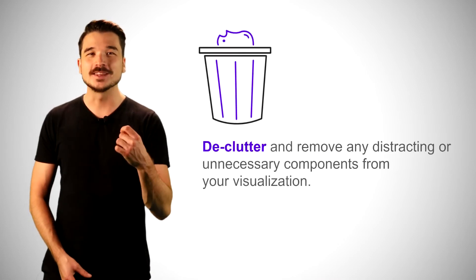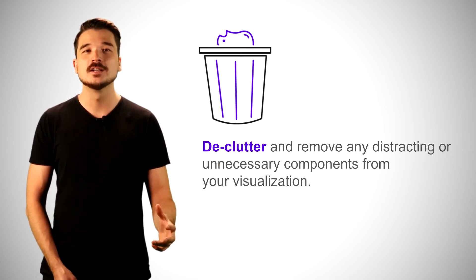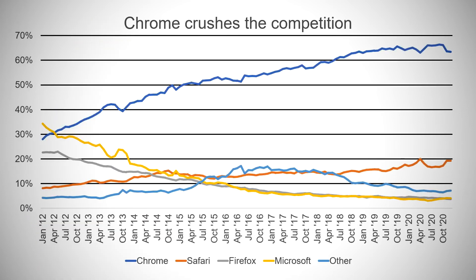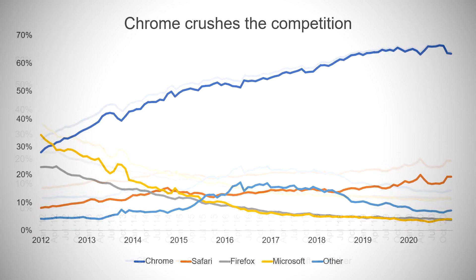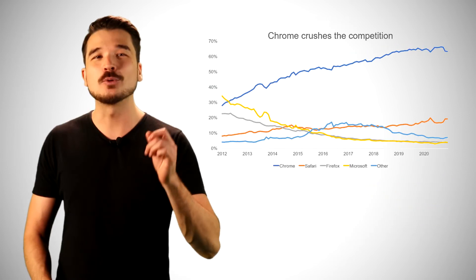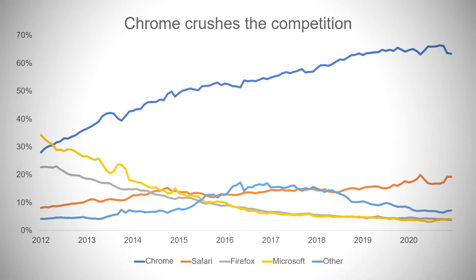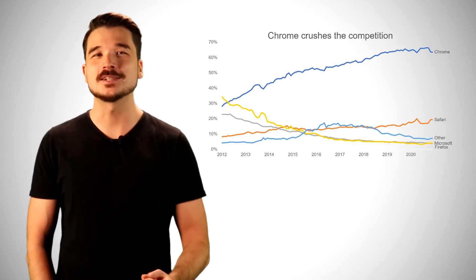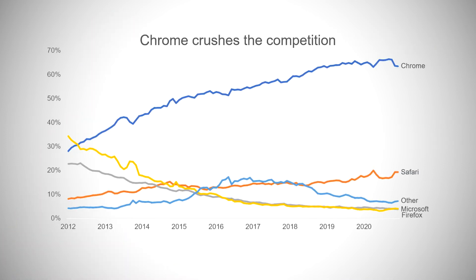Once we have selected the optimum chart type, we're ready for step three: declutter. We must relentlessly declutter and eliminate any visual components that are not working hard to support our key message about Google Chrome's stellar growth. Let's take out those grid lines, simplify our x-axis and remove all that unnecessary repetition of the years and months, and eliminate the legend at the bottom of the chart, putting labels right next to each of the lines they're labeling. Without the legend, we're not dependent on color to convey which series is which, so we can gray everything out.